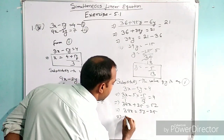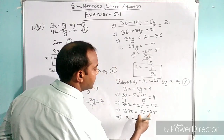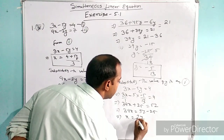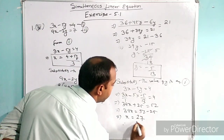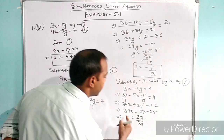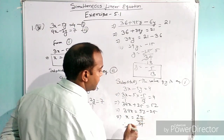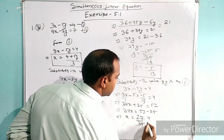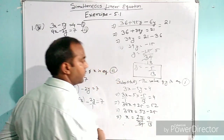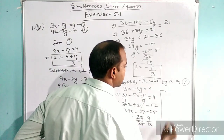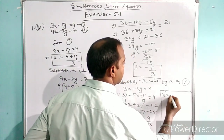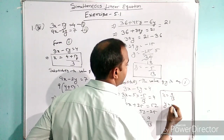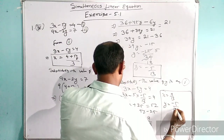So we have 52 minus 25 equals 27. Therefore x equals 27 by 39. We simplify by cutting by 3: three nines are 27 and three thirteens are 39. Hence the value of x is equal to 9 by 13, and y is equal to minus 5 by 13.